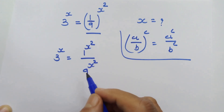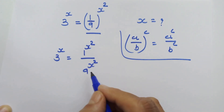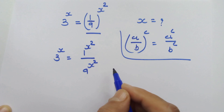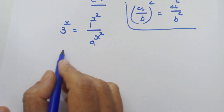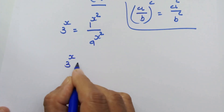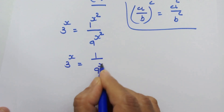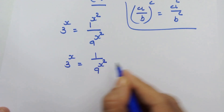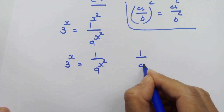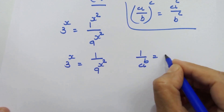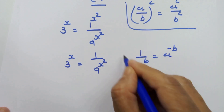Now 1 will remain the same no matter what power it has. So our next step is 3 raised to x is equal to 1 upon 9 raised to x square. Now if we have 1 upon a raised to b, then we can write it as a raised to minus b.